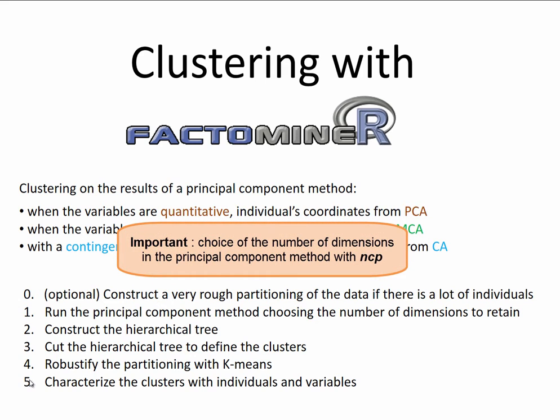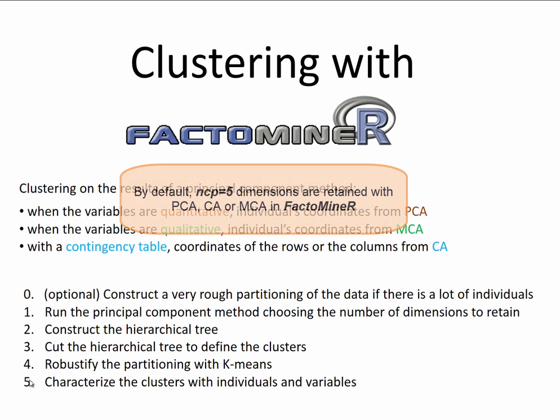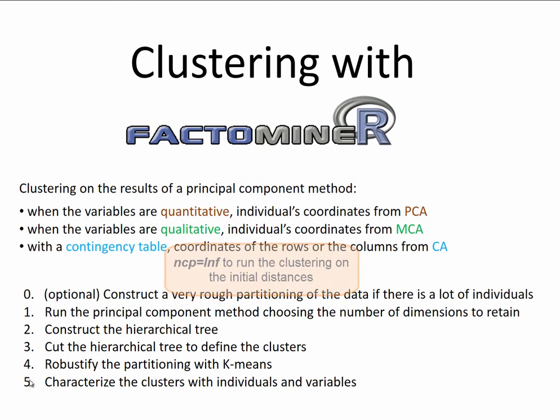The distances used to build the clustering will be calculated using only these first dimensions. The later axes are put to the side because they are considered to represent noise. There is therefore an important choice to be made for the number of dimensions to keep. By default, the principal component method will keep the first five. We can modify this number using the NCP option in the PCA, CA or MCA. If we want to do the clustering based on the actual distances, we have to keep all of the axes by writing ncp equal inf.